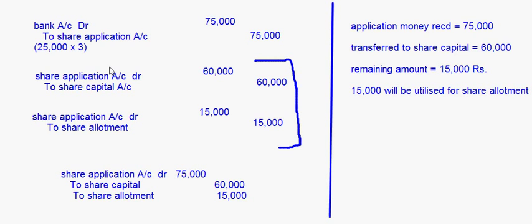This was a simple example for pro rata allotment. We can have more complicated cases which I'll take up later. There can also be a combination of both rejection of shares and pro rata allotment — the directors reject a certain number of shares, refund that money, and apply pro rata allotment to the remaining shares. In our next session we'll cover examples for both cases, and also some questions on other topics like features of shares.